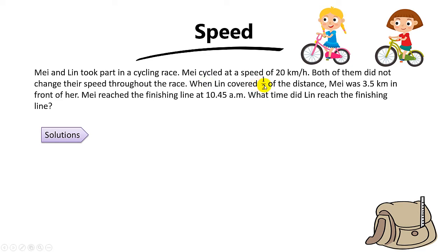When Ling covered half of the distance, May was 3.5 km in front of her. May reached the finishing line at 10:45 am. What time did Ling finish at the finishing line?